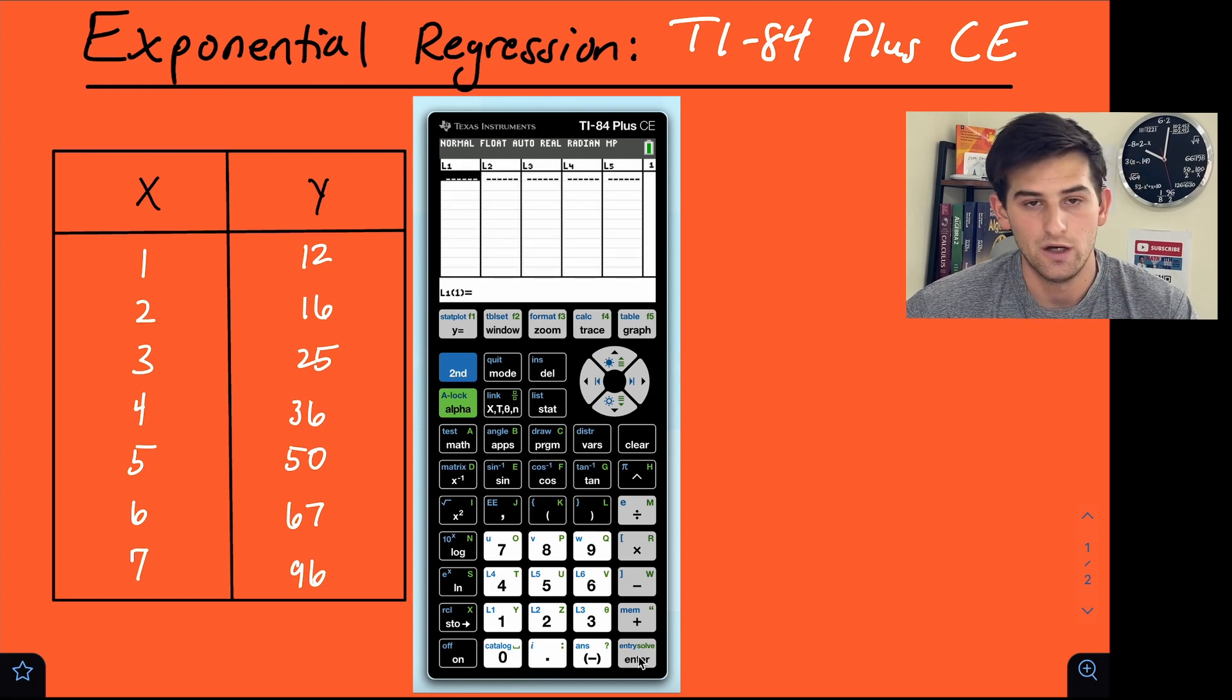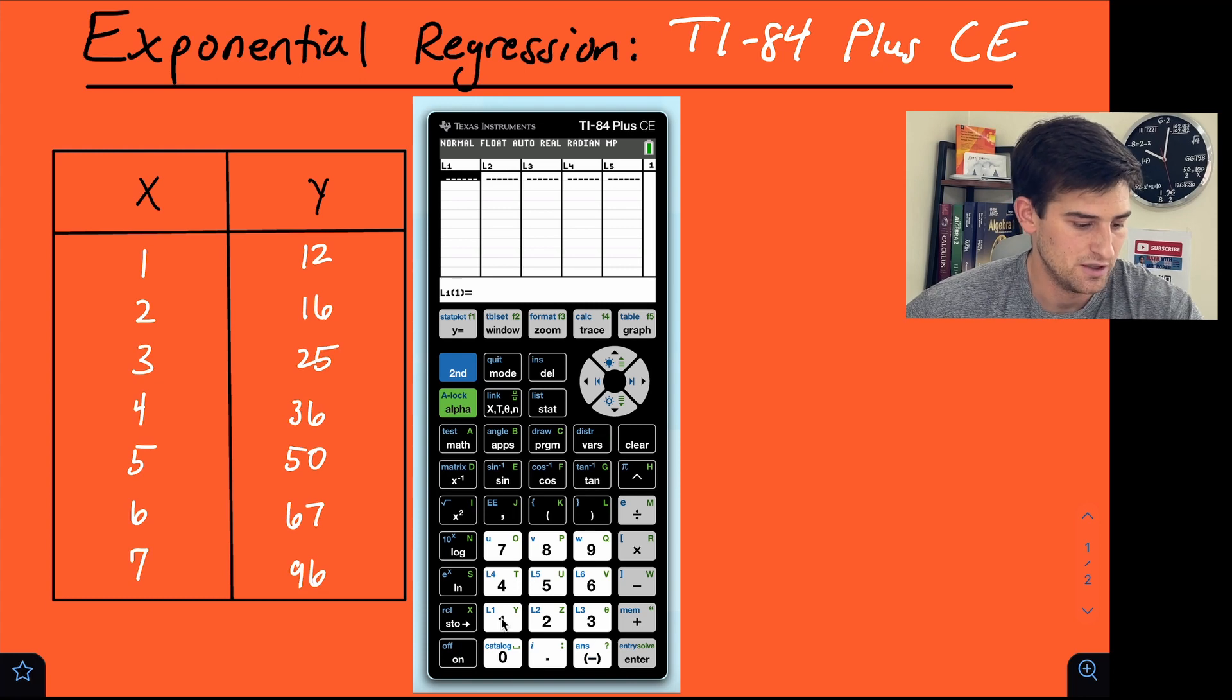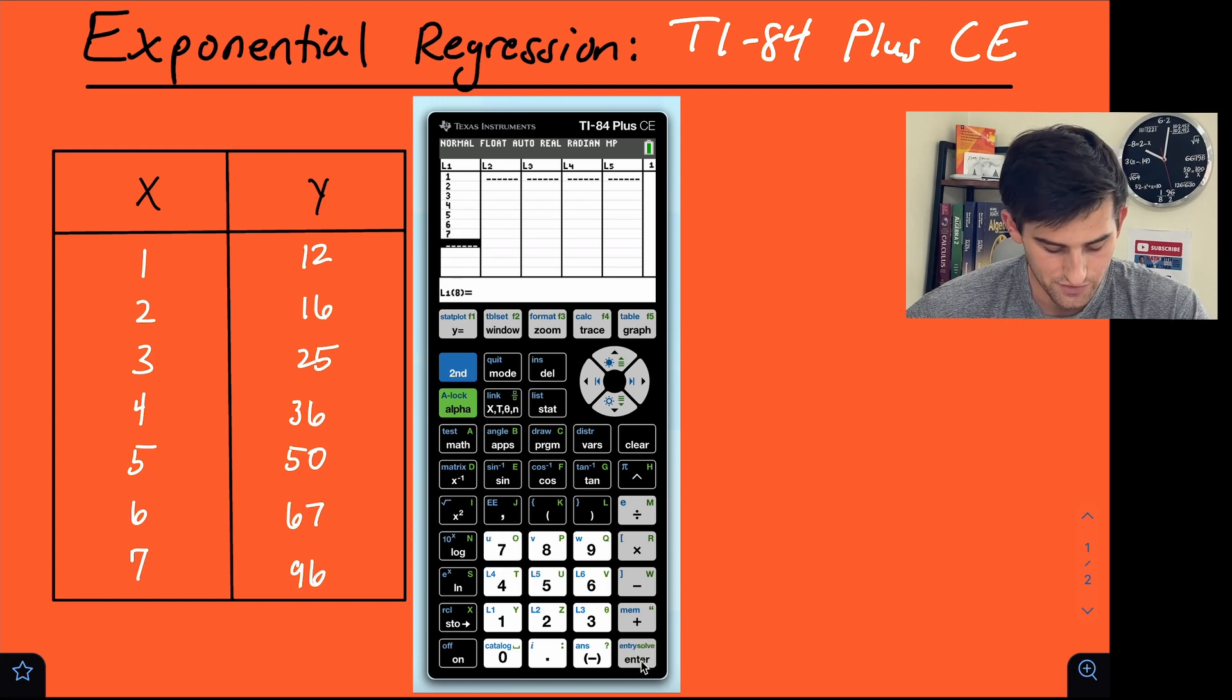And now in L1, we're going to type our x values. So this would be 1, 2, 3, 4, 5, 6, and 7. Alright, 1 through 7.